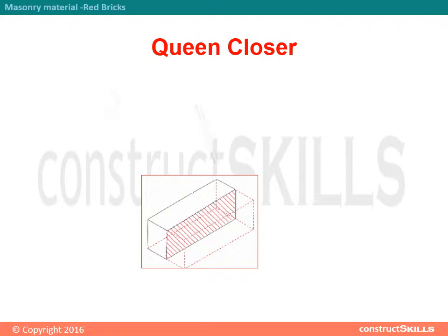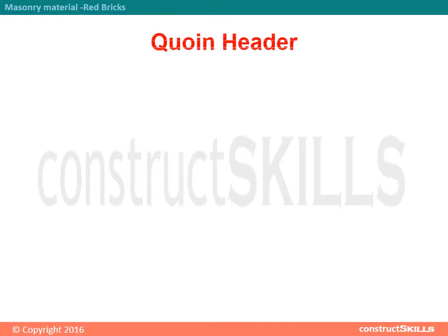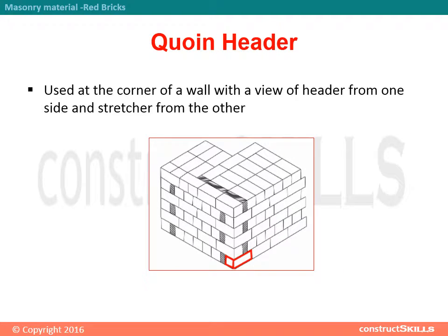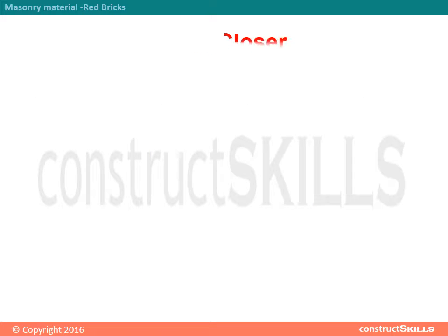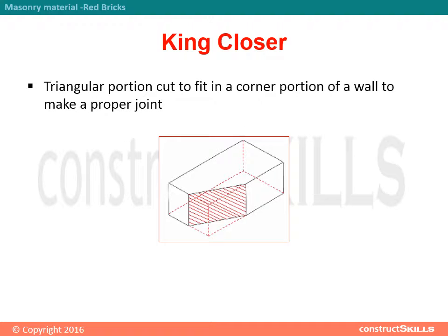Queen closer: half bricks cut lengthwise, used along the length of a coin masonry block at the corner of a wall for staggering joints of alternate courses. Coin header: used at the corner of a wall, showing a header from one side and a stretcher from the other.